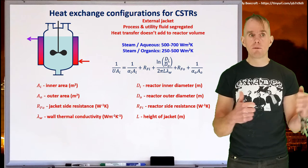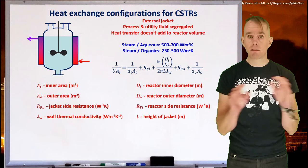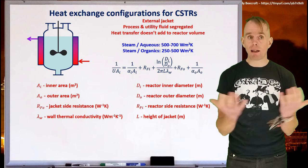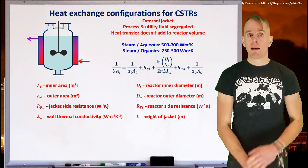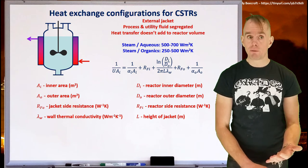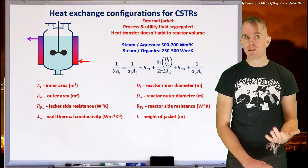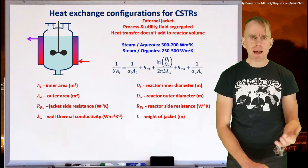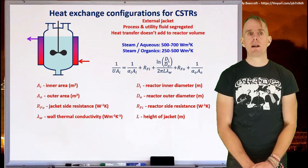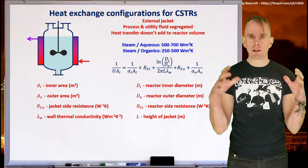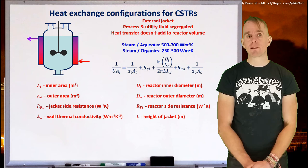And so here you've got the area of the inner heat transfer surface, the area of the outer heat transfer surface, various fouling coefficients. Very, very important to forget that heat transfer is never going to be perfect. And then thermal conduction through the various cylindrical parts of the reacting system.